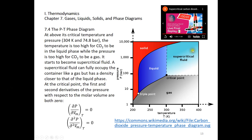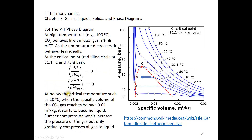At the critical point, the first derivative of pressure with respect to volume (∂P/∂V) equals zero, and the second derivative of P with respect to molar volume also equals zero. For a van der Waals gas, since P is a function of molar volume, we can take these first and second derivatives, set them to zero, and solve the resulting equations to find the critical point.